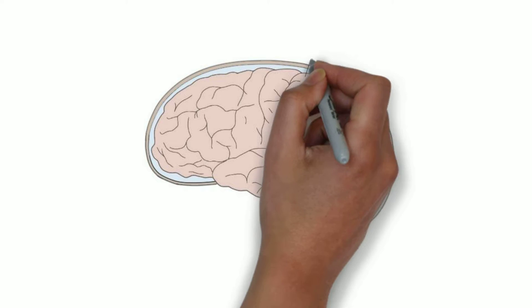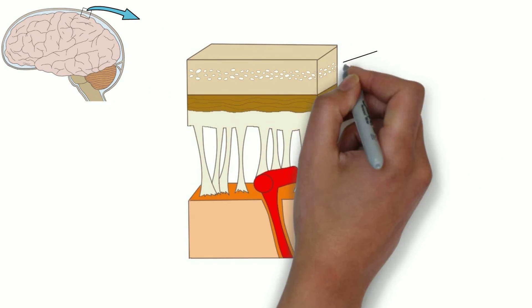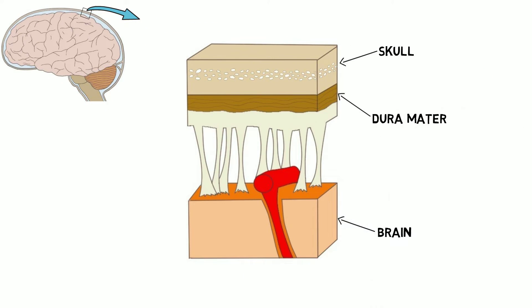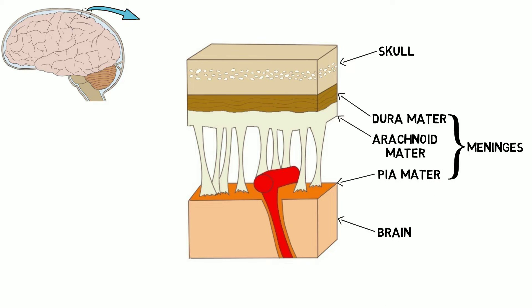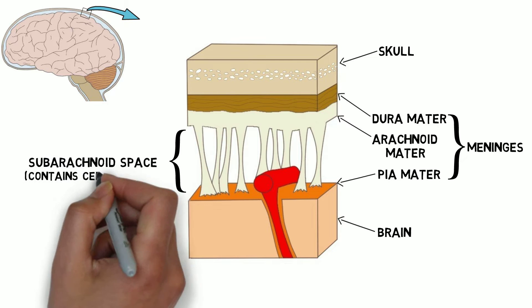The term meninges refers to three membranes that surround the brain and spinal cord: the dura mater, the arachnoid mater, and the pia mater. The meninges protect and provide structural support for the brain, as well as contain cerebrospinal fluid.